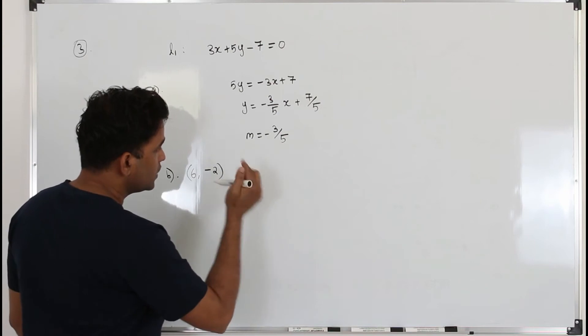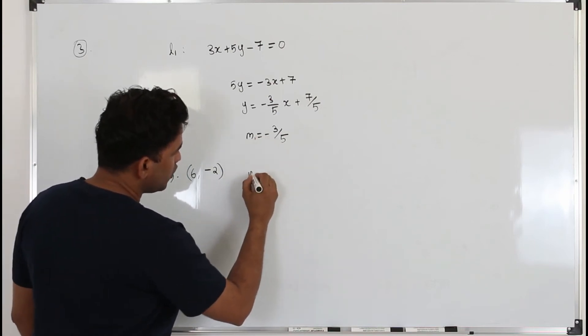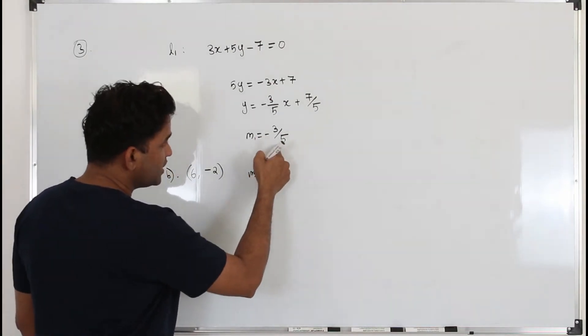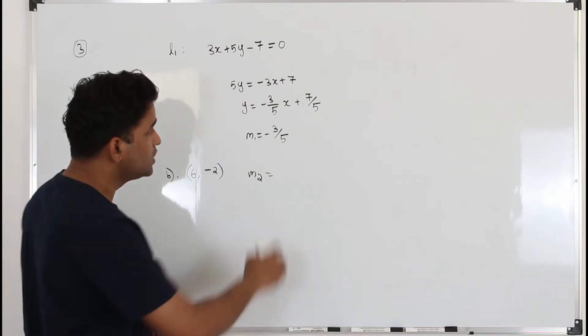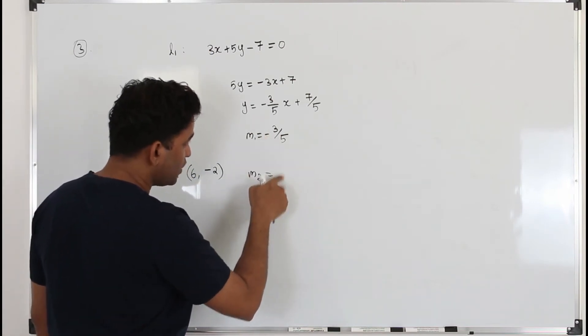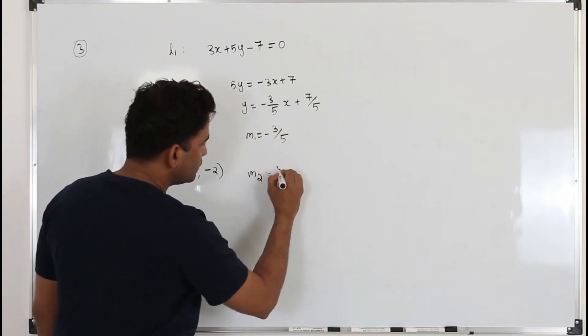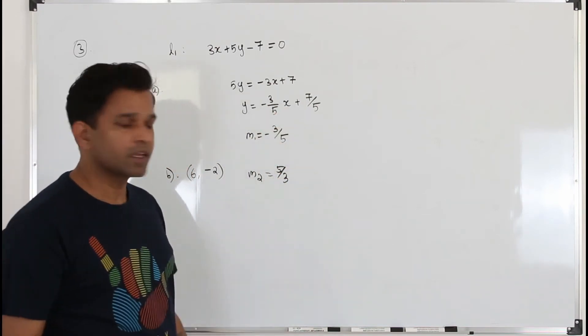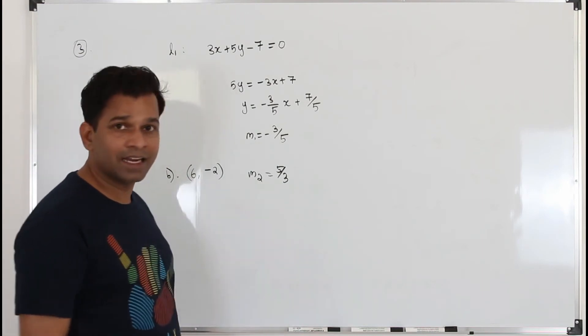So the slope of L2 will be the negative reciprocal of the slope of L1. We know the slope of L1. So take it as M1. The slope of L2 will be negative reciprocal of this. Or in other words, change the sign. If it is positive, change it to negative. Negative, change it to positive. Flip the number. This will be the slope of the second line.